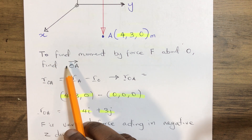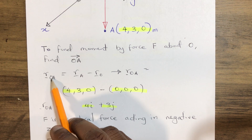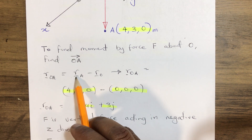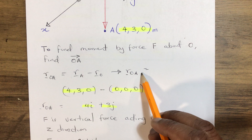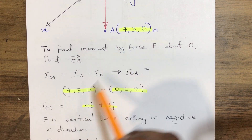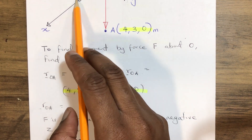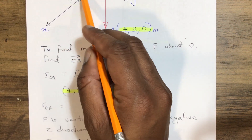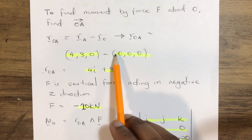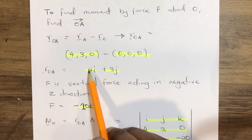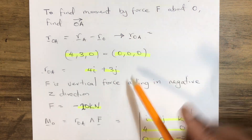To find this, the position vector r_OA equals vector A minus vector O. We subtract the coordinates (4, 3, 0) from the origin (0, 0, 0). This becomes: 4 minus 0 = 4i for the X axis component, and 3 minus 0 = 3j for the Y axis component, and 0 for Z.